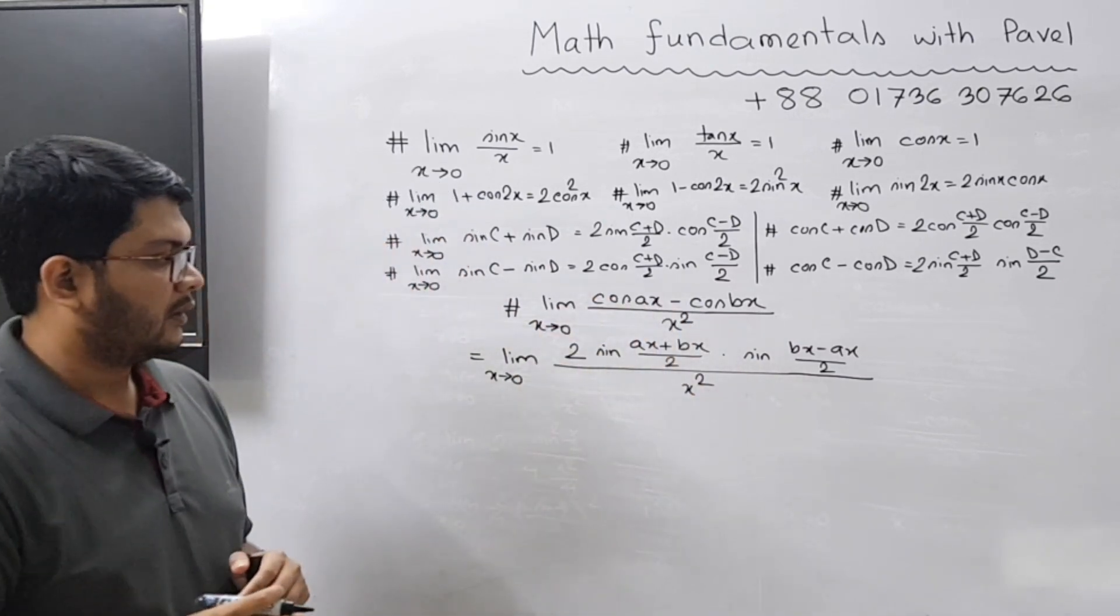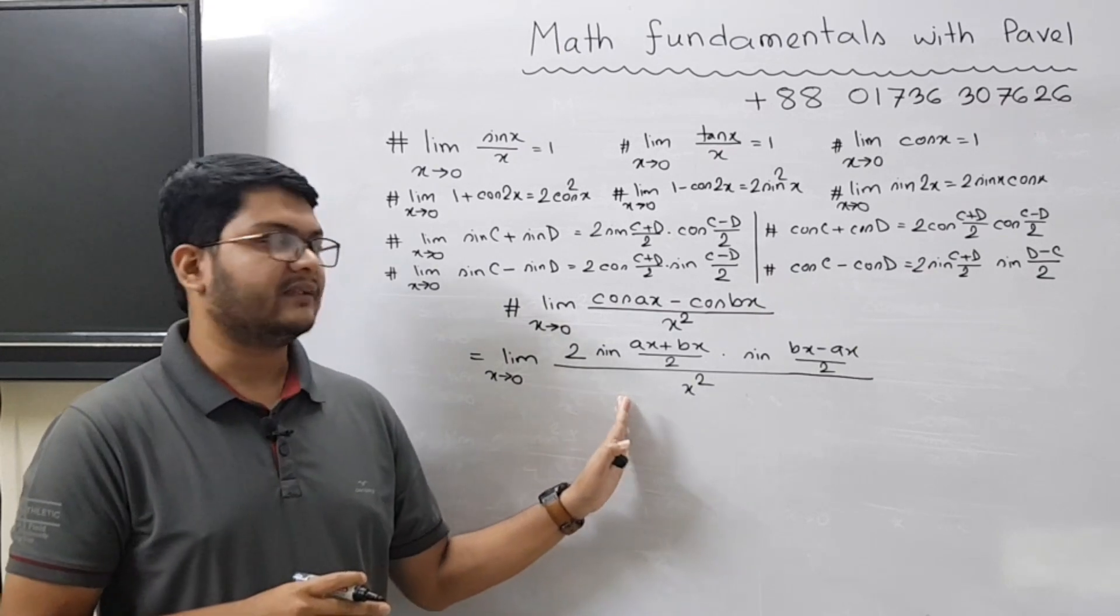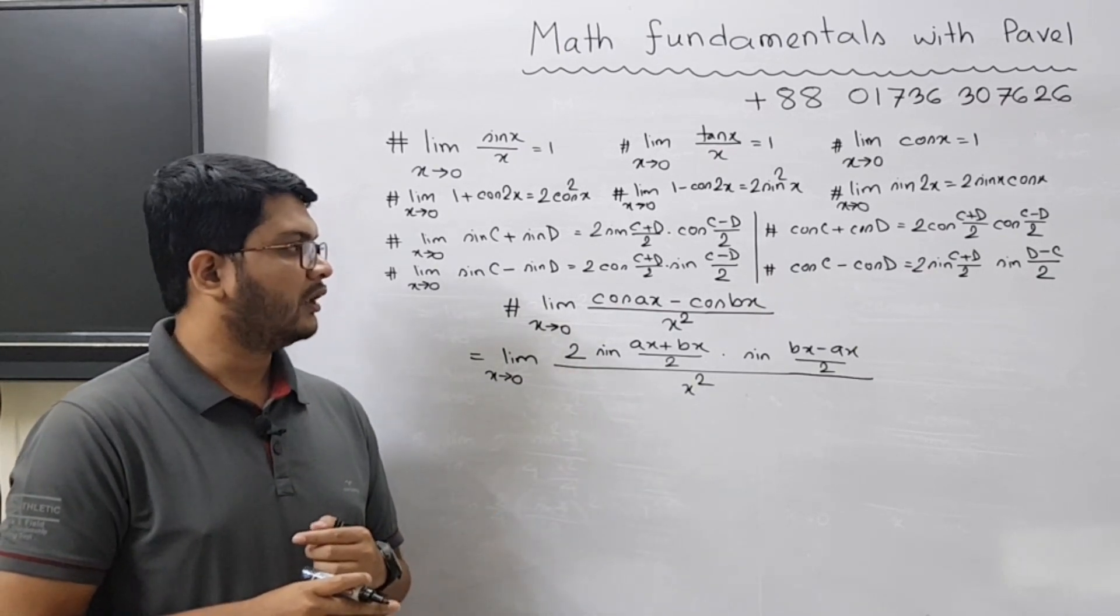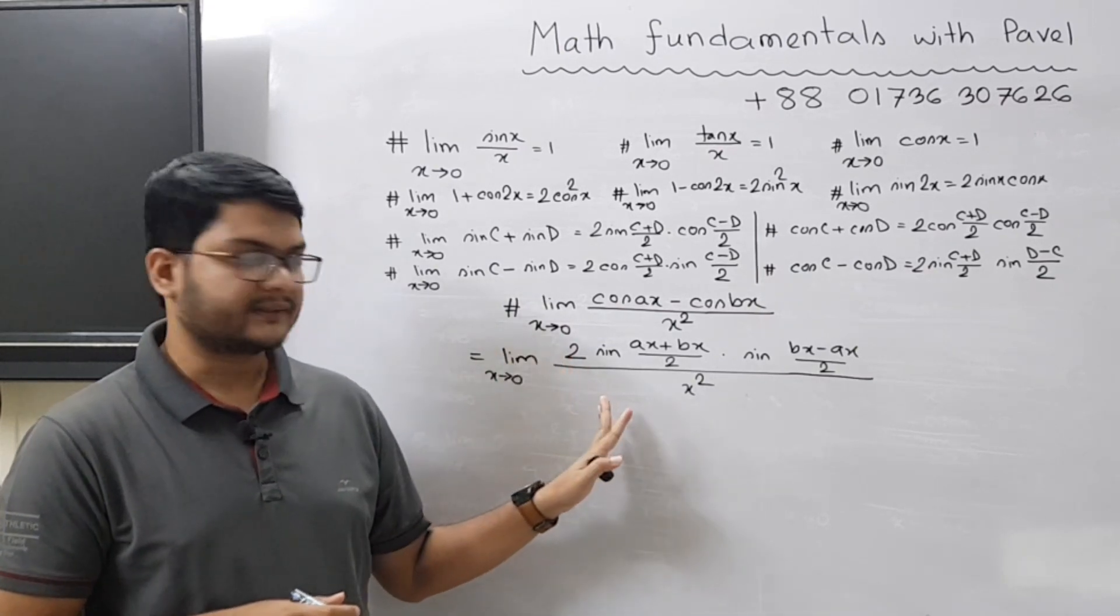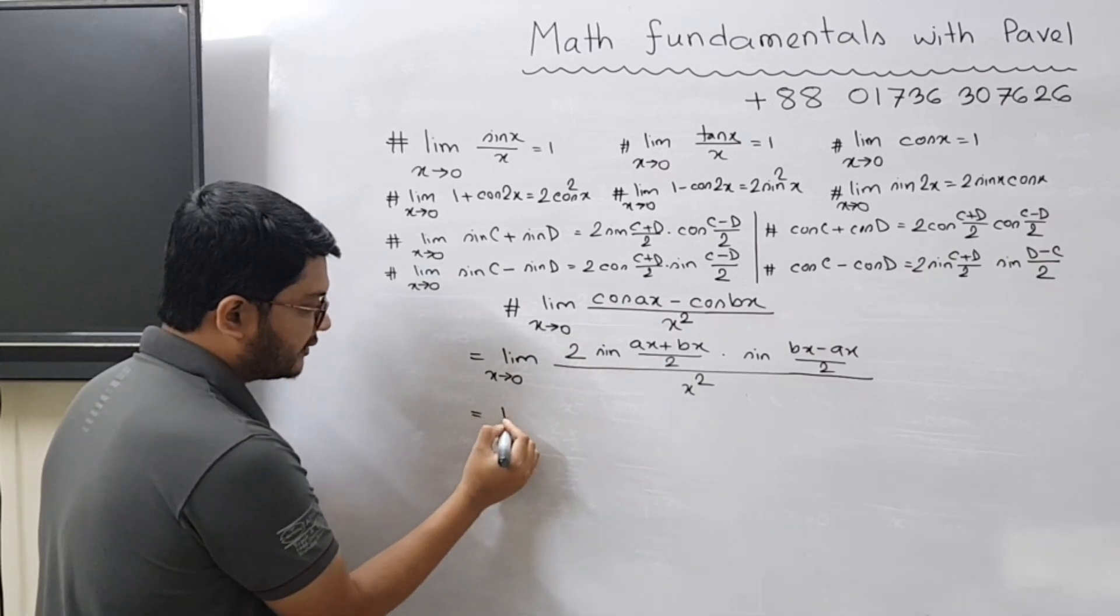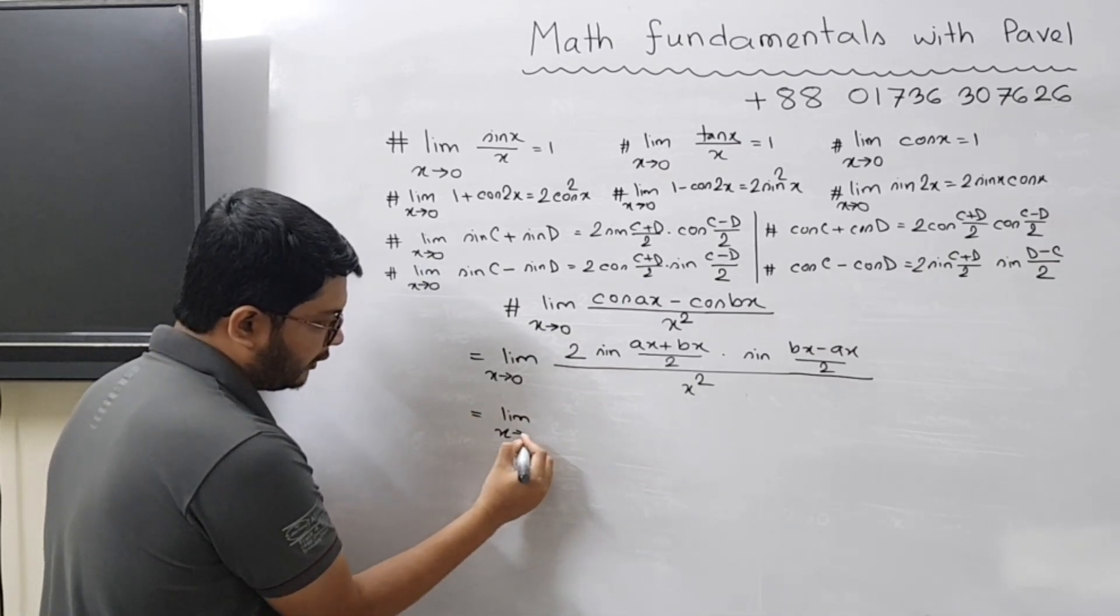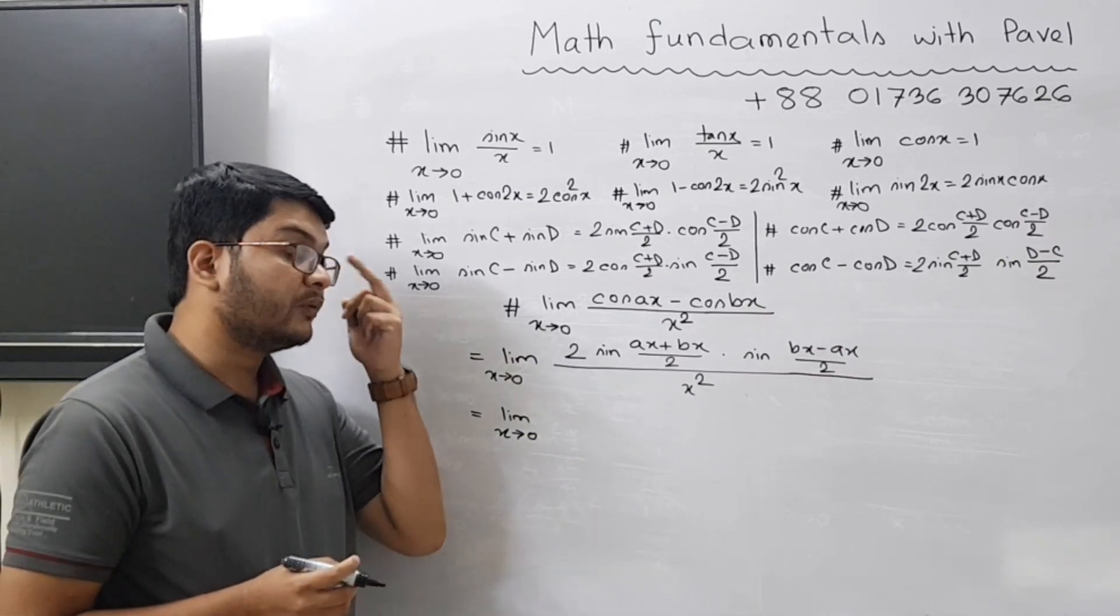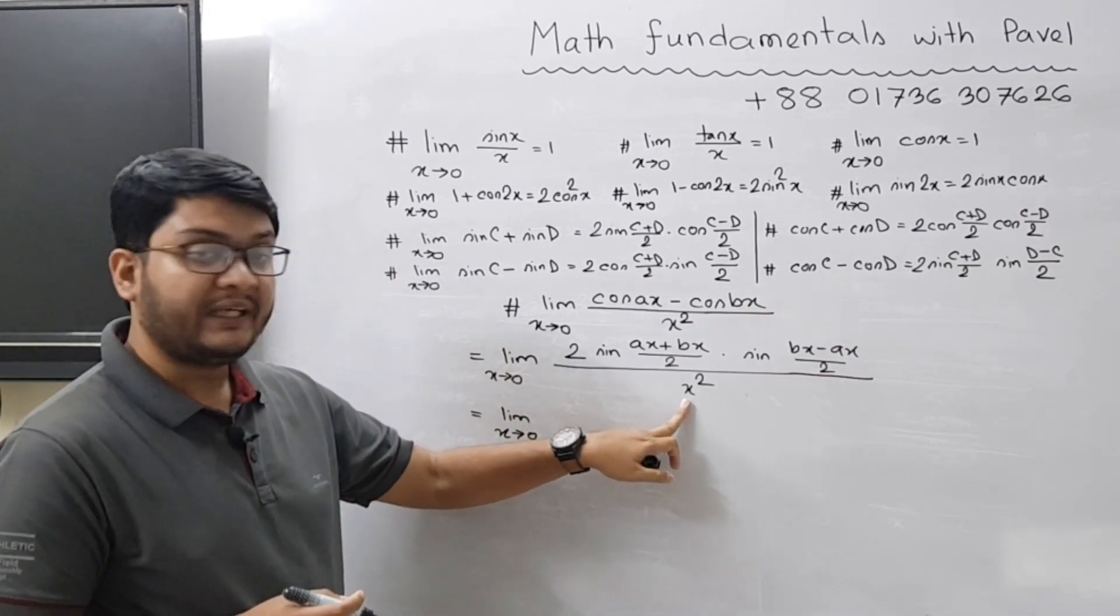Now coming to the next line: limit x tends to zero. What we will do now is that we will split x square. We will give one x here and one x there.